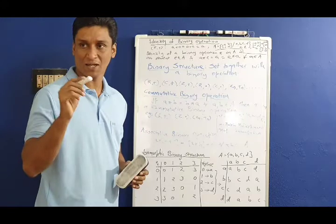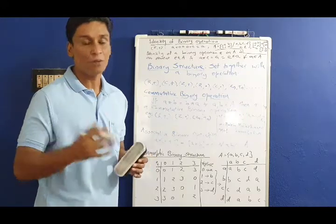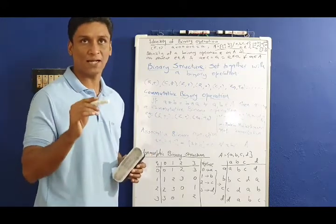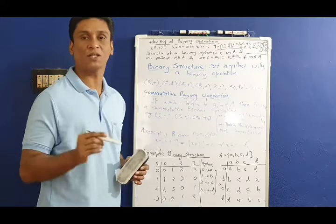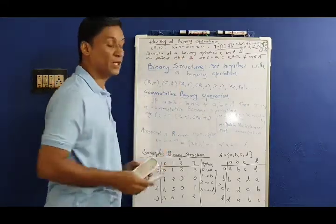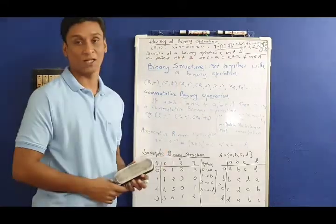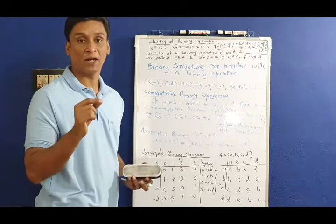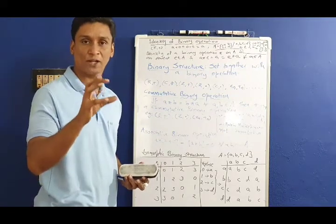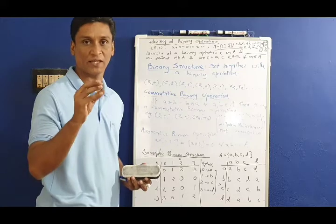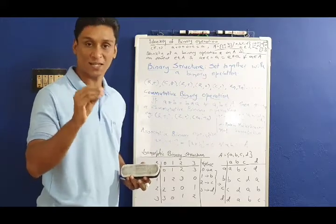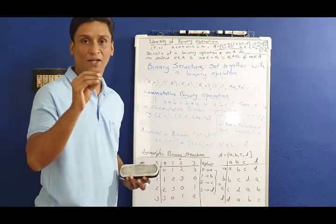We are going to look at a particular property. There is a definition: the identity of a binary operation. If you have a set with a binary operation, there is an identity element.